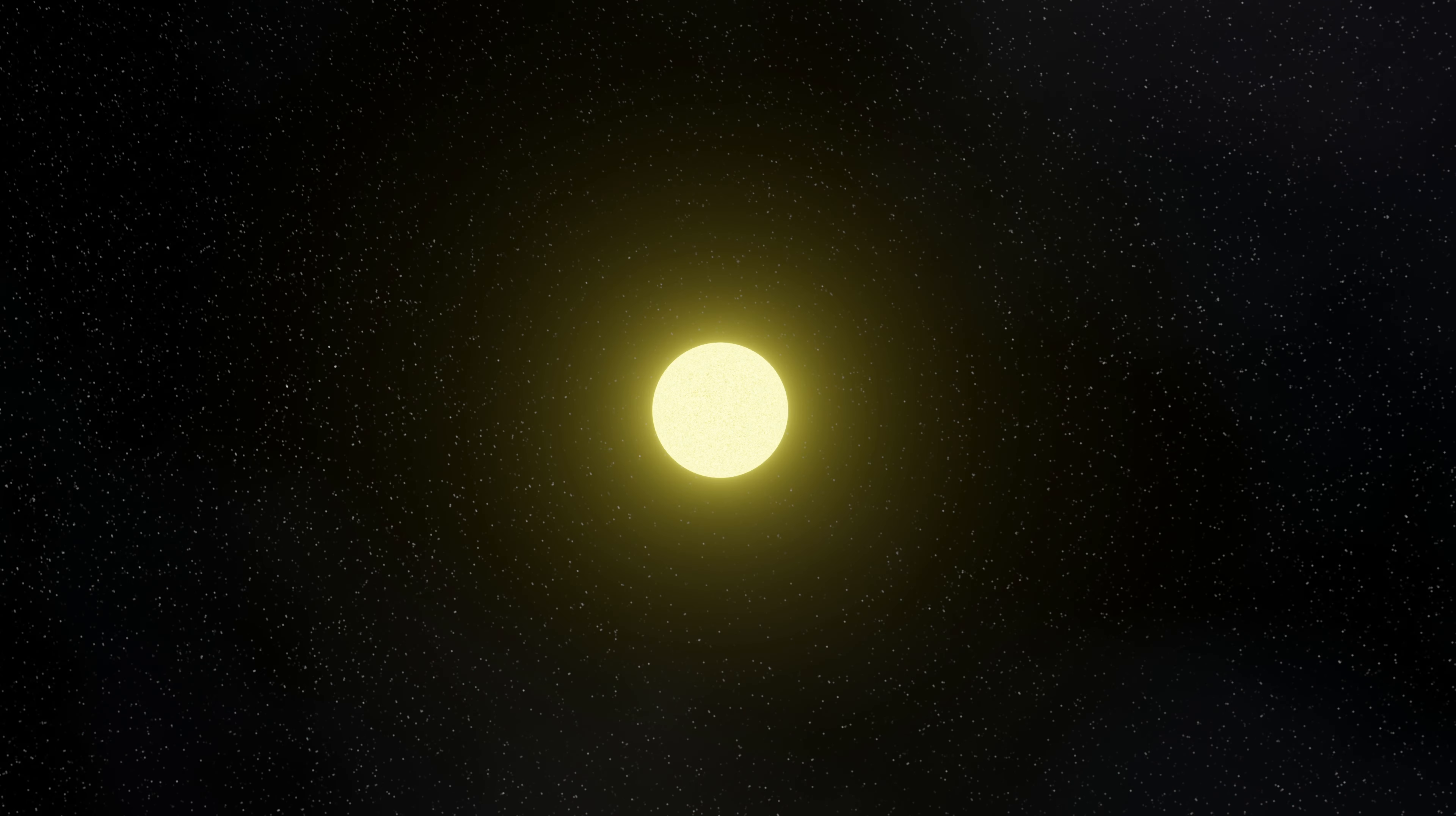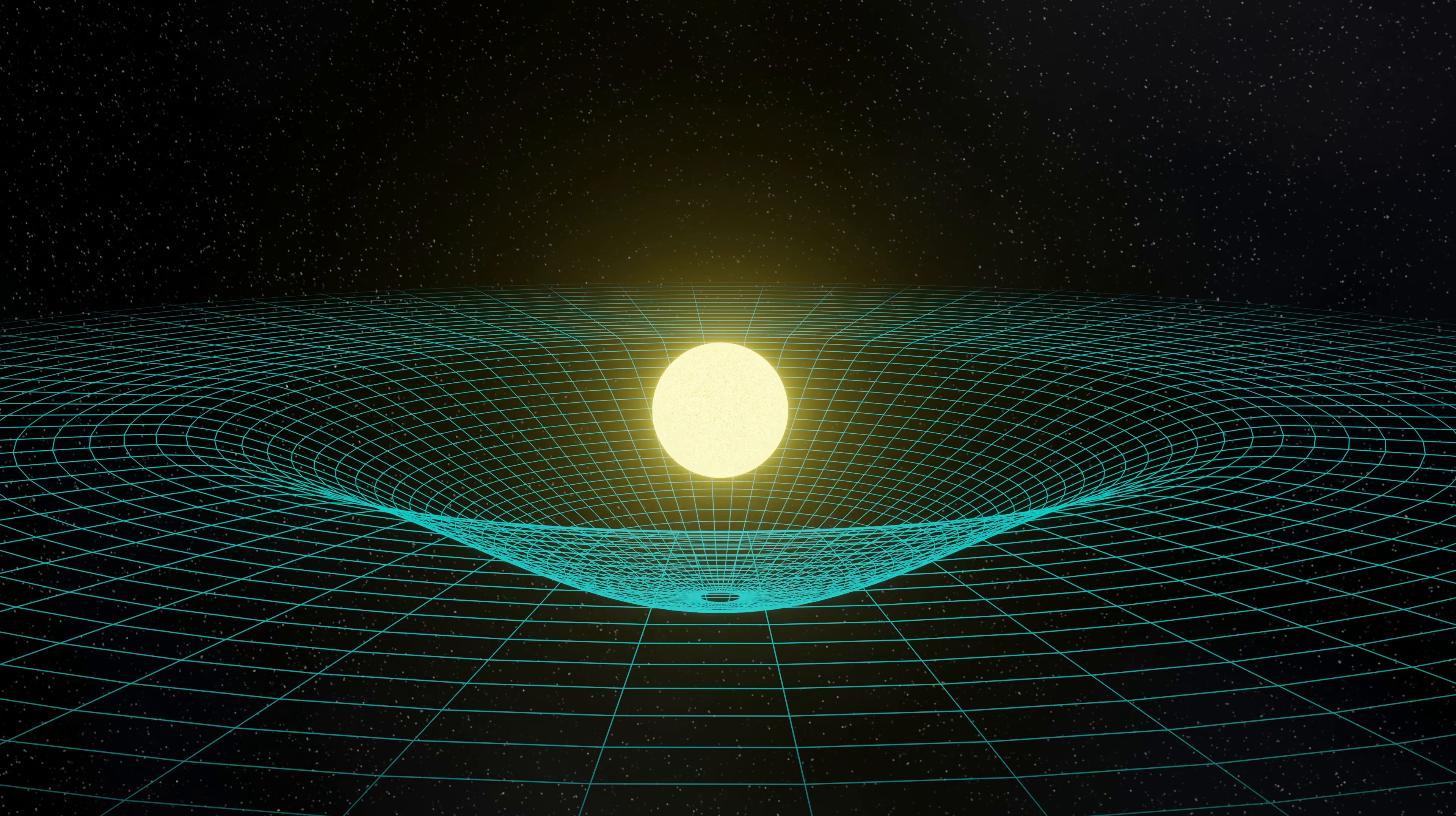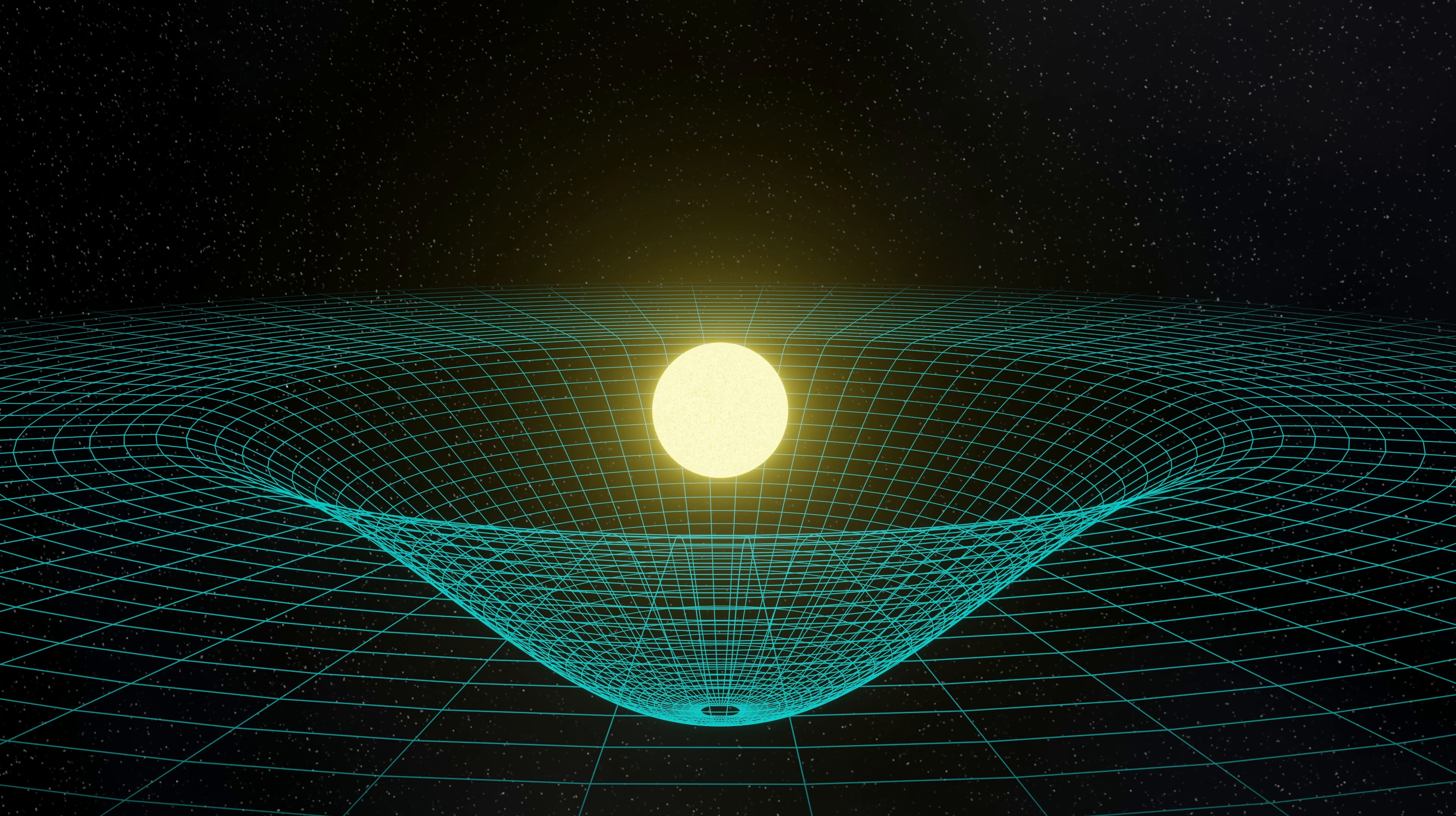When Einstein came along, he devised the general theory of relativity. This states, among other things, that gravity, rather than being a force felt between two objects, is actually caused by the warping of space-time. Objects in the universe tend to try to move in straight lines. However, the warping of space-time will mean that a body that moves towards a massive body like a planet or a star will have its motion bent into a circular orbit by the warping of space-time.